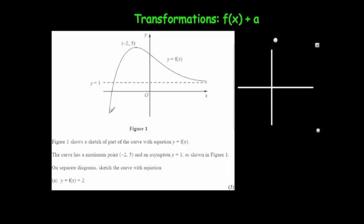Let's have a look at another question. This time we've got a curve that reaches a maximum point at (−2, 5) and then goes down and approaches the asymptote y = 1, so it never reaches a height of 1. The question says sketch the curve f(x) + 2, so the whole graph is going to be shifted two squares upwards. The asymptote was y = 1, and adding 2 means it moves up to y = 3.